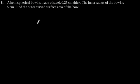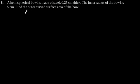Exercise 13.4, Question number 8. A hemispherical bowl is made of steel 0.25 cm thick. The inner radius of the bowl is 5 cm.